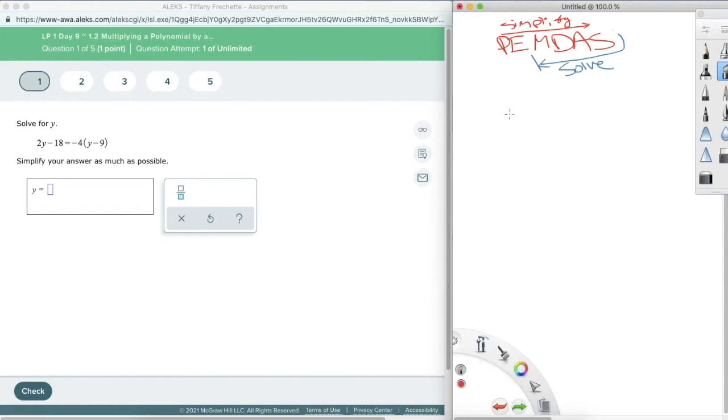So we have 2y plus 18 equals negative 4 times y minus 9, and that's the difference of y minus 9, which is why it's in parentheses. Alright, so we need to start with our parentheses here. We need to get rid of these. We need to simplify them.